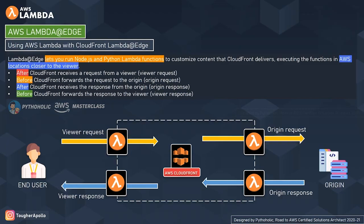The first trigger point is the viewer request — this is an incoming request to CloudFront. It triggers Lambda after CloudFront receives a request from the user, and before executing the code it checks whether the requested object is in the CloudFront cache. So the user sends the request and CloudFront checks if it is already cached before forwarding it to the origin.